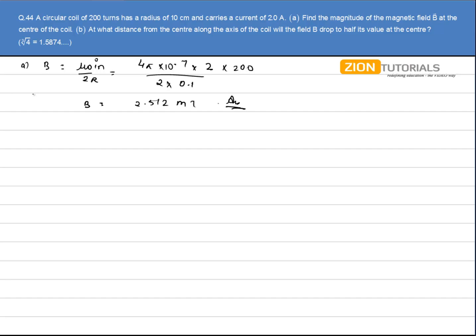In second part, I have to calculate at what distance from the center along the axis of the coil will the magnetic field drop to half of that at its center. This is my magnetic field at center.